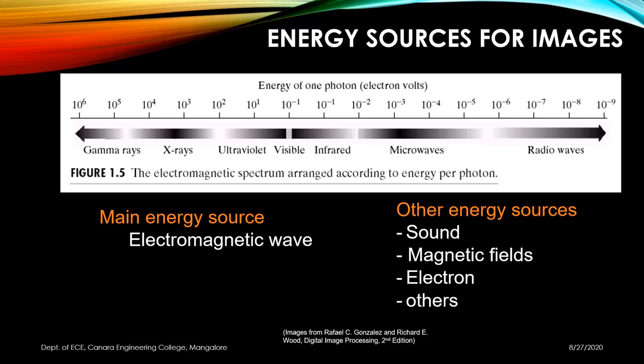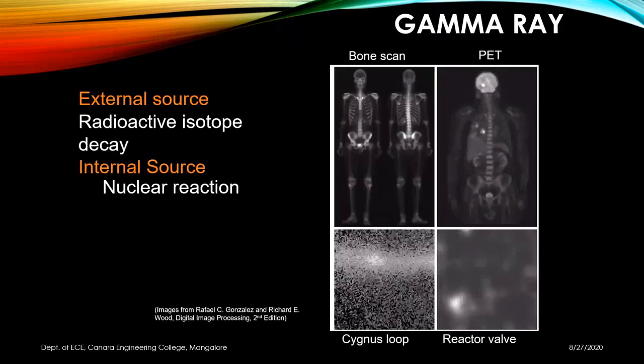Gamma rays can be used for bone scans, positron emission tomography (PET) to see the functioning of tissues or organs, capturing outer space signals, or checking reactor walls for safety. External sources include radioactive isotope decay and internal sources include nuclear reactions.